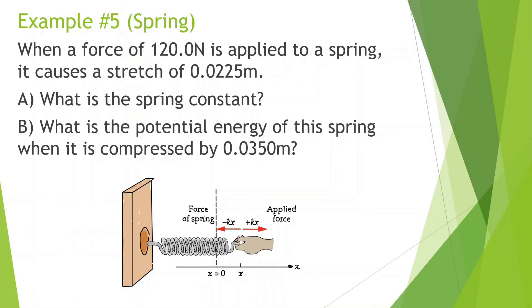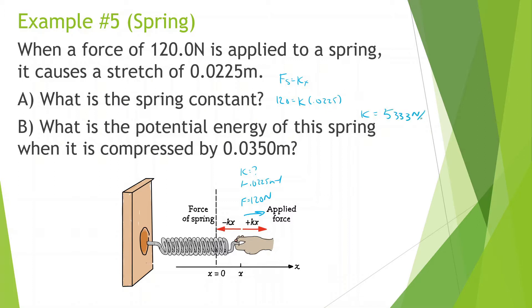Let's look at some example problems. When a force of 120 newtons is applied to a spring, it causes a stretching of 0.0225 meters. What is the spring constant? We know we're applying a force of 120 newtons, and when we do that, it stretches 0.0225 meters. The force of a spring is equal to kx, so 120 is equal to k times 0.0225. Doing the algebra: 120 divided by 0.0225, and we get 5,333 newtons per meter. That's how stiff this spring is.